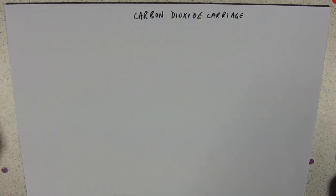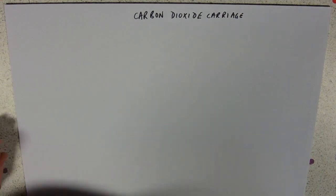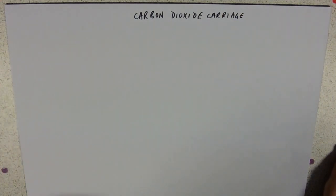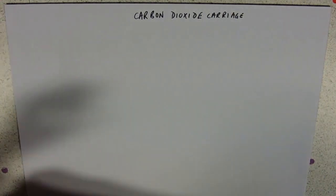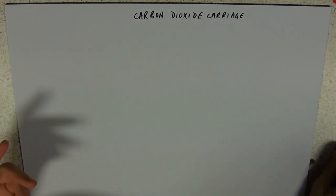Okay, so this is carbon dioxide carriage. I'm actually gonna, I think I'll try and do this without the aid of a picture of a red blood cell and do all the reactions inside the red blood cell. I think possibly that's the way it's done in your booklet.